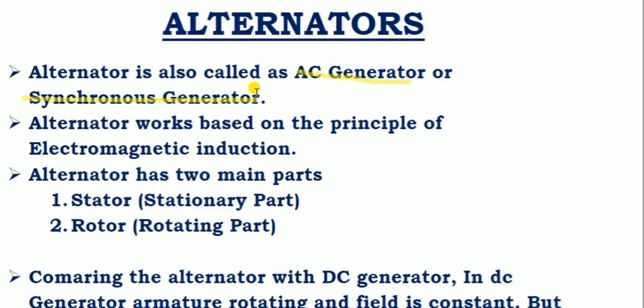Any machine that rotates at synchronous speed is called a synchronous machine. If that machine is a motor, it is a synchronous motor; if it is a generator, it is a synchronous generator. If a machine rotates at other than synchronous speed, it is called an asynchronous machine. So the alternator is a synchronous machine, specifically a synchronous generator.